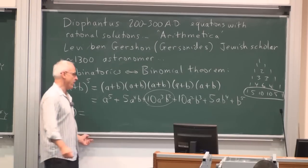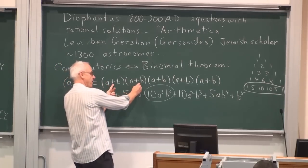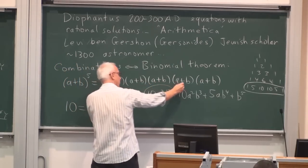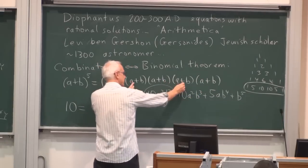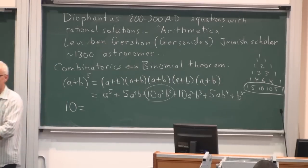Where's that 10 coming from? Well, we're looking at all the ways we can get a cubed times b squared, when we multiply something from this one times something from this one, and so on times something from this one. So we have to choose one term from each one of these brackets, and combine them. And we're looking at how many ways can we get an a cubed times b squared.